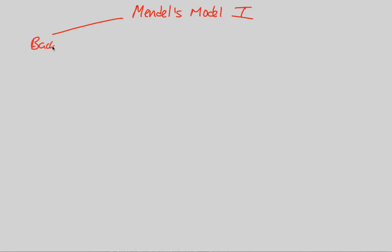By 'model' I mean the experiments Mendel conducted and the conclusions and laws that came out of them. We'll start with Mendel's Model One. These are very important terms you should know, especially their origins and meanings, because we're going to be using them a lot as we move forward with genetics. First and foremost, a term you must absolutely know is the idea of an allele. An allele is simply defined as an alternate version of a gene.